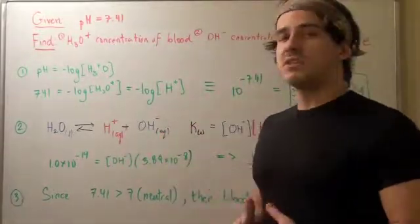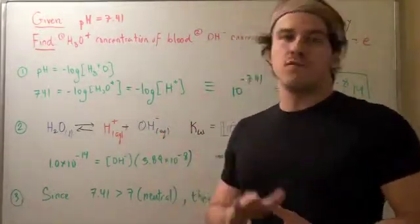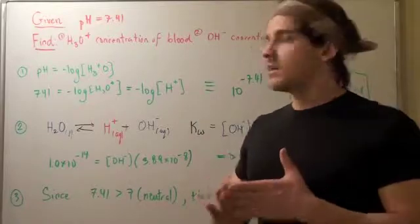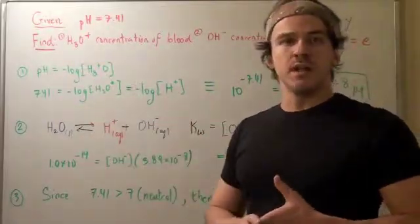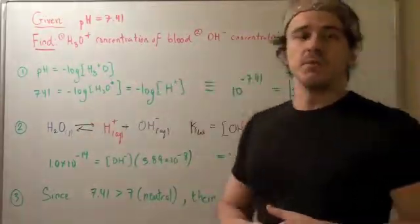So, in this example, we begin with the blood pH of 7.41. What we want to find is the hydronium concentration of our blood and the hydroxide concentration of our blood.